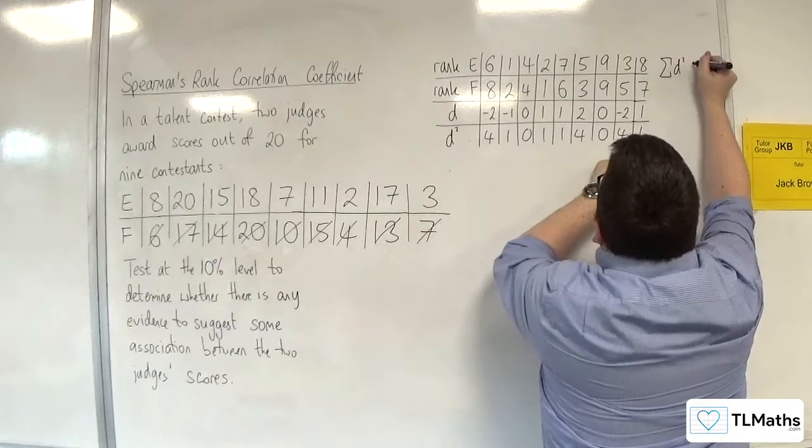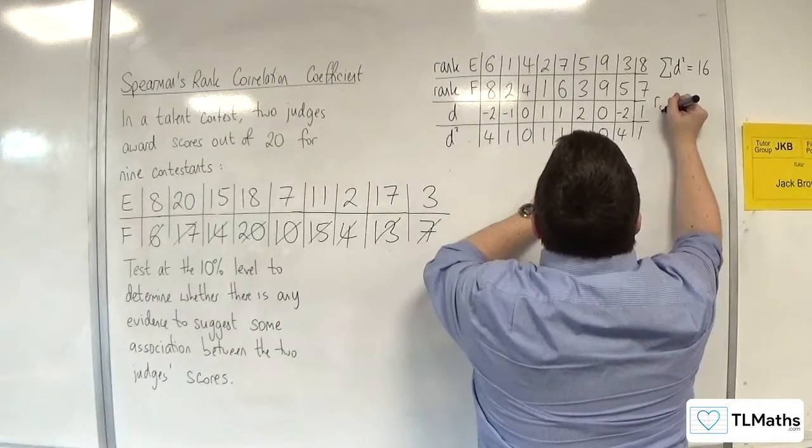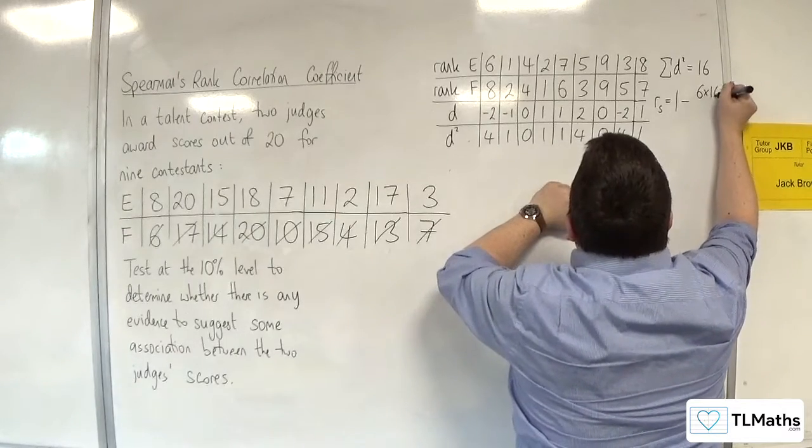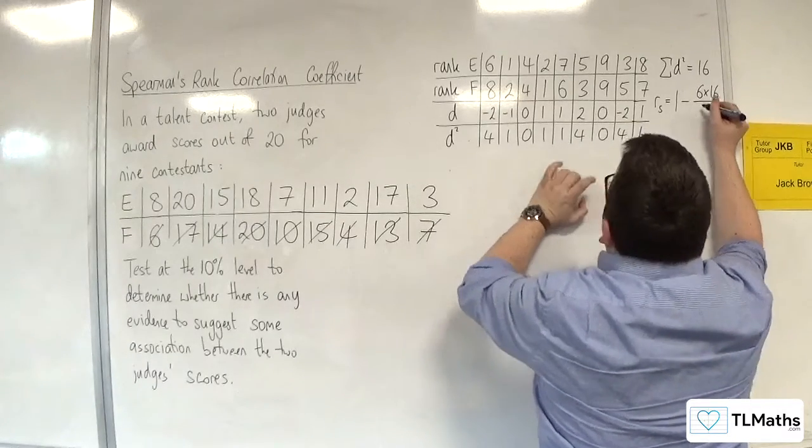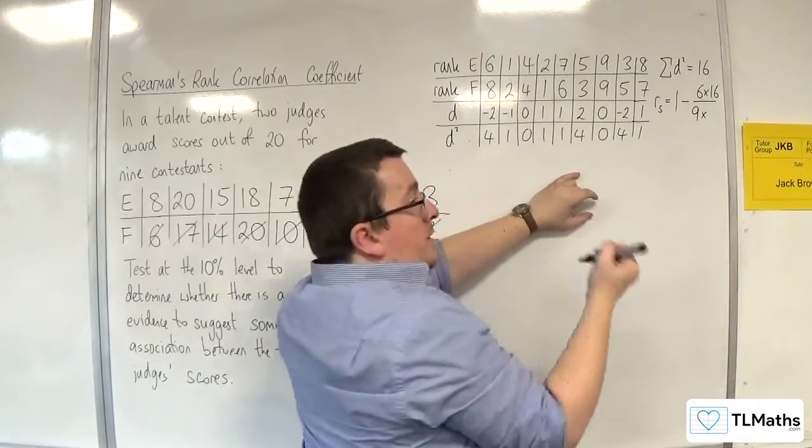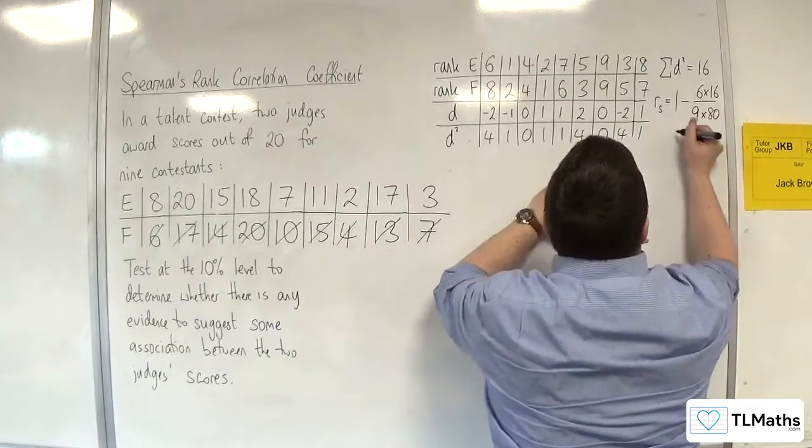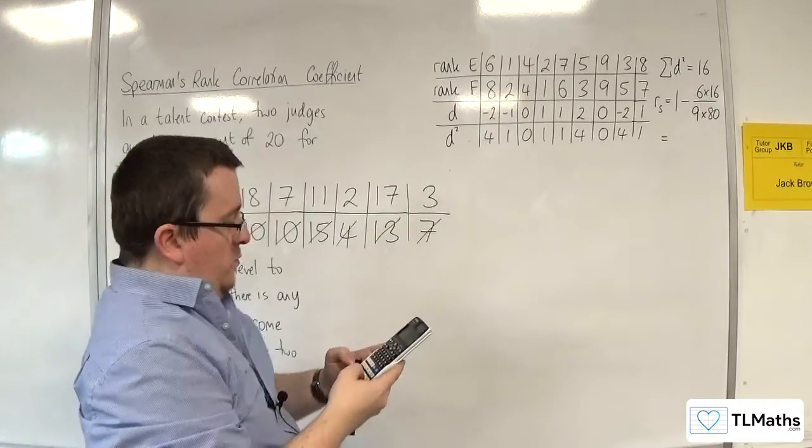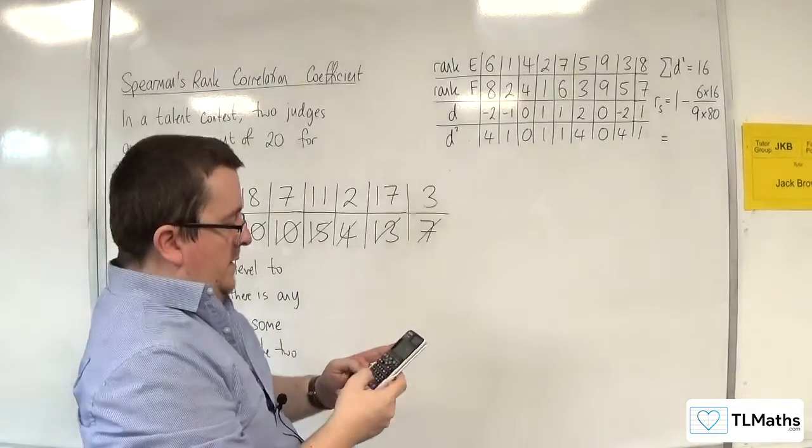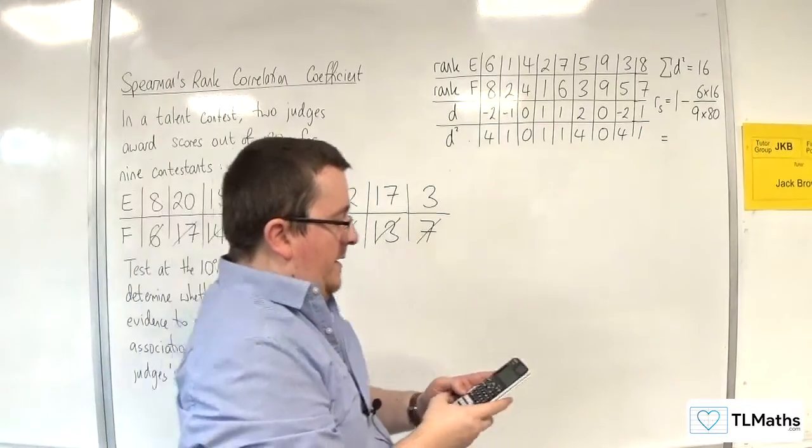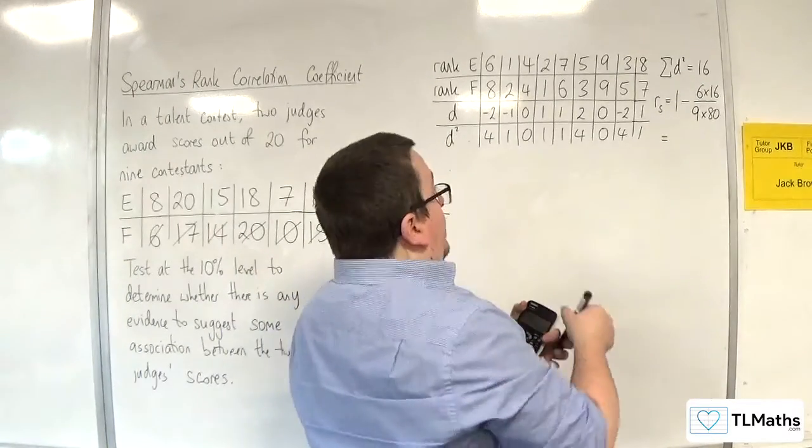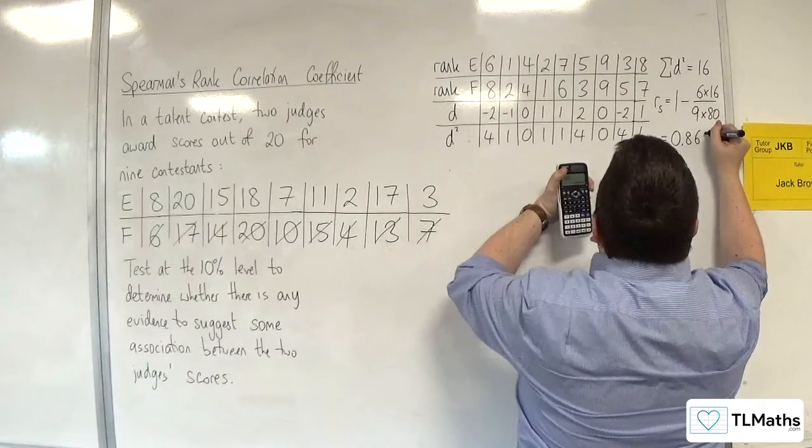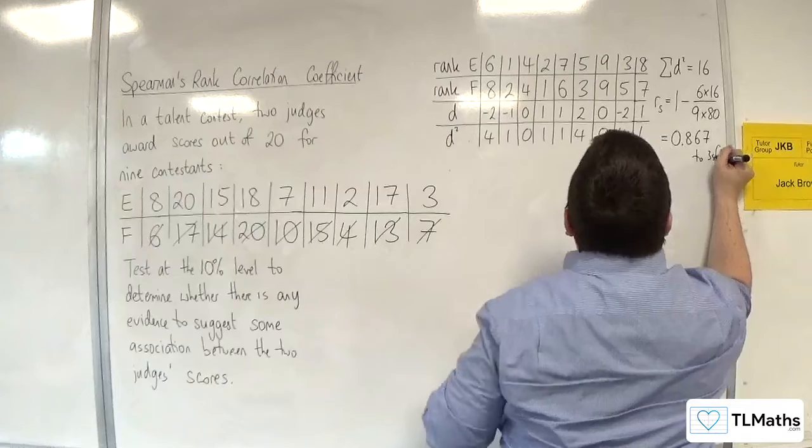That means that Spearman's rank correlation coefficient will be 1 takeaway 6 lots of 16, divided by n, which is 9, times by 9 squared, take away 1, so 80. So 1 takeaway 6 lots of 16 over 9 times 80. We get 13 fifteenths, so that will be 0.867 to 3 significant figures.